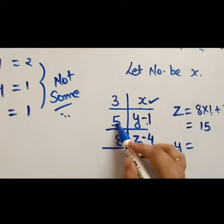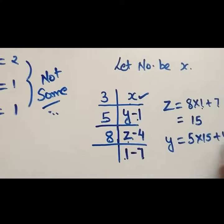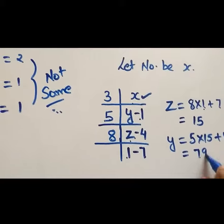Y will be what? 5 into Z, that is 15 plus 4. This comes out to be 79.